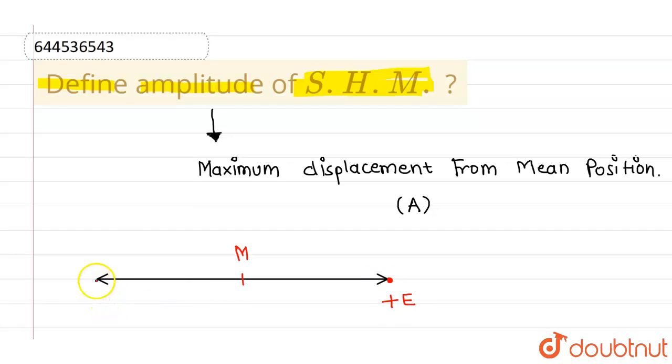Similarly, this is the negative extreme, and this is also at the same distance from the mean position as the positive extreme. So this distance between mean position and extreme position is called amplitude.